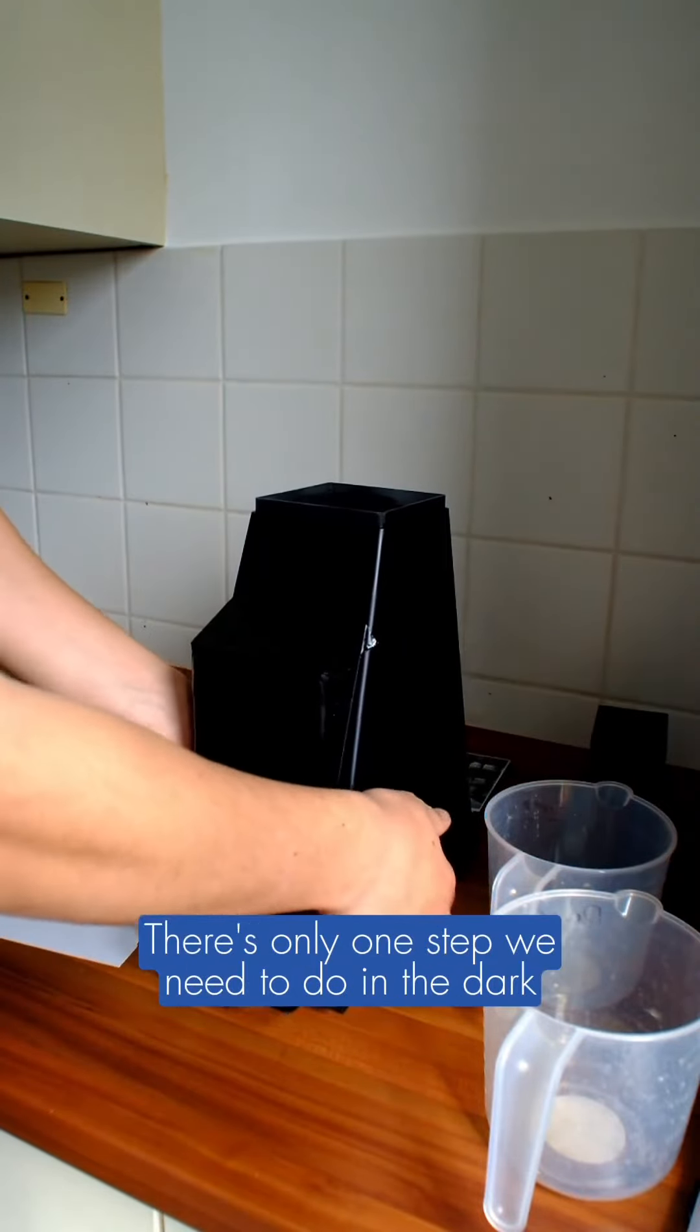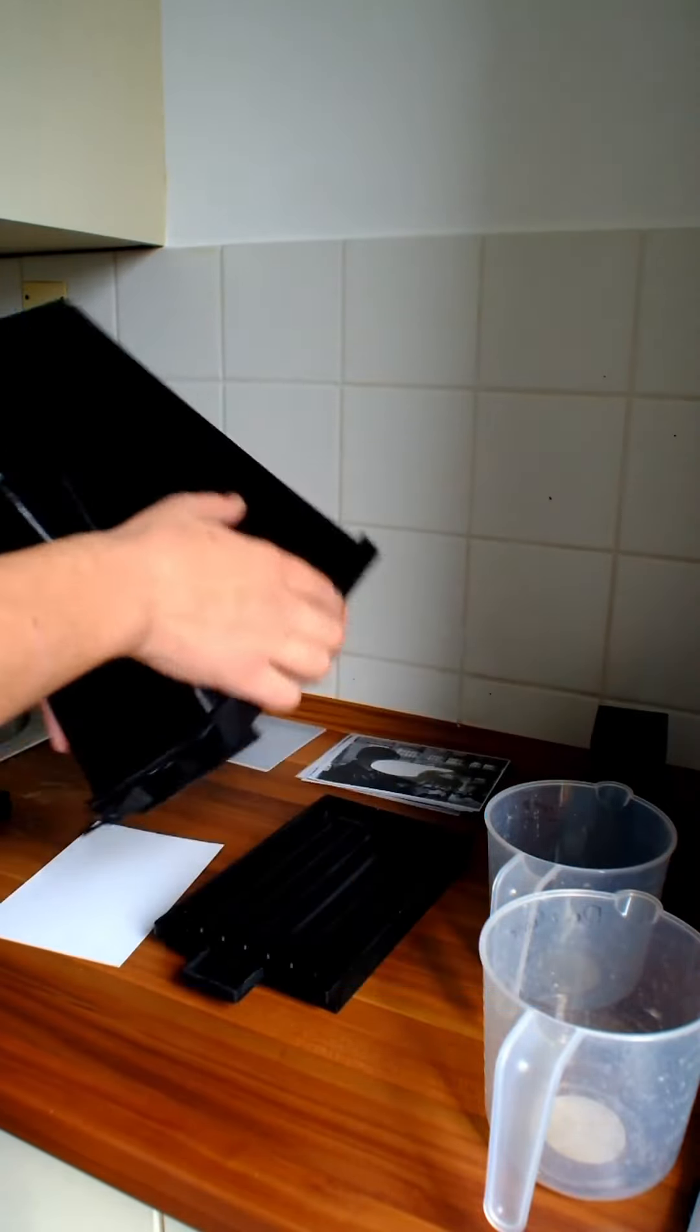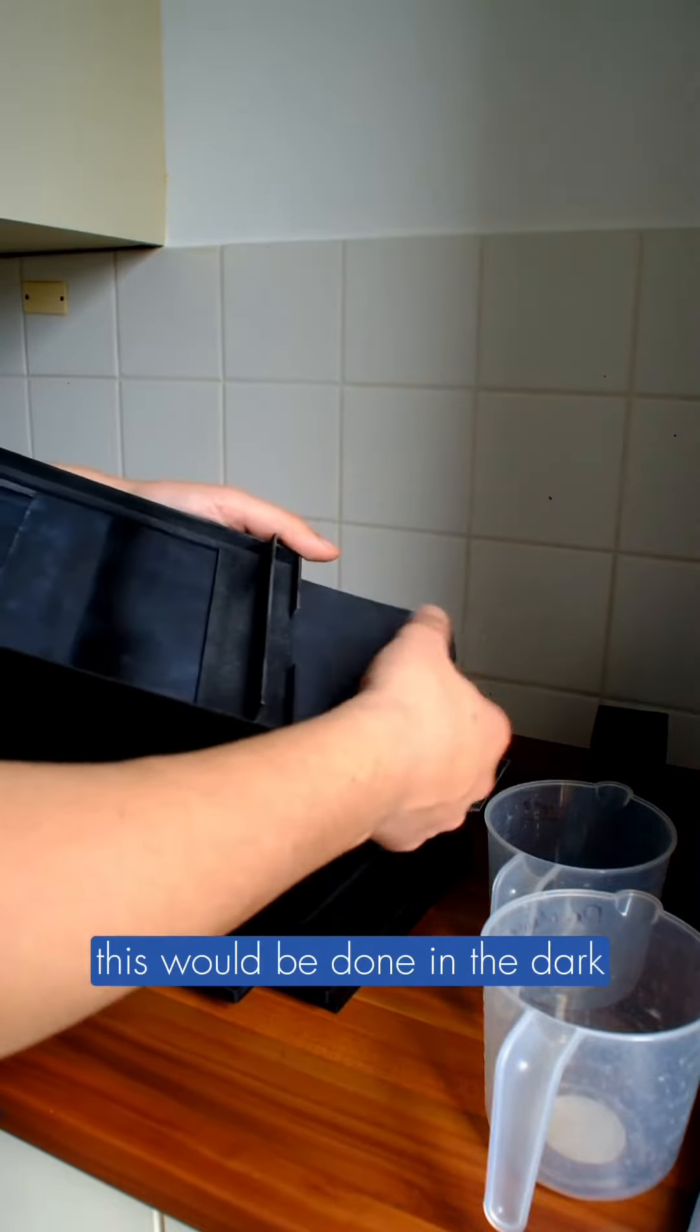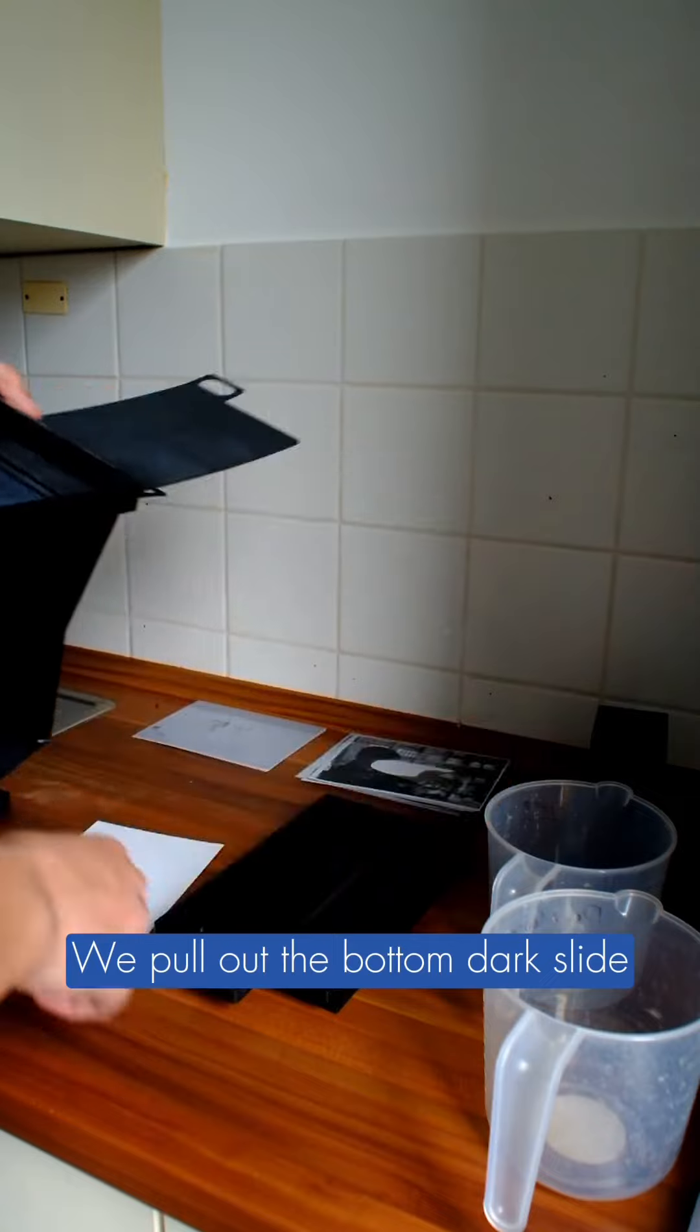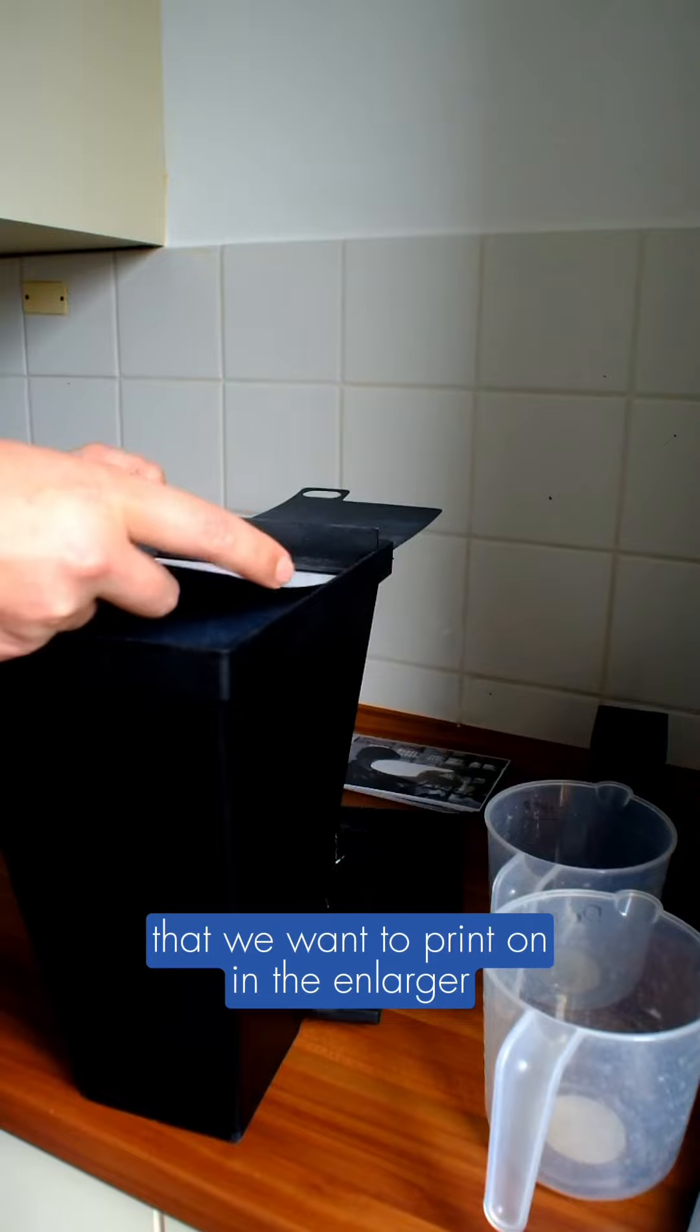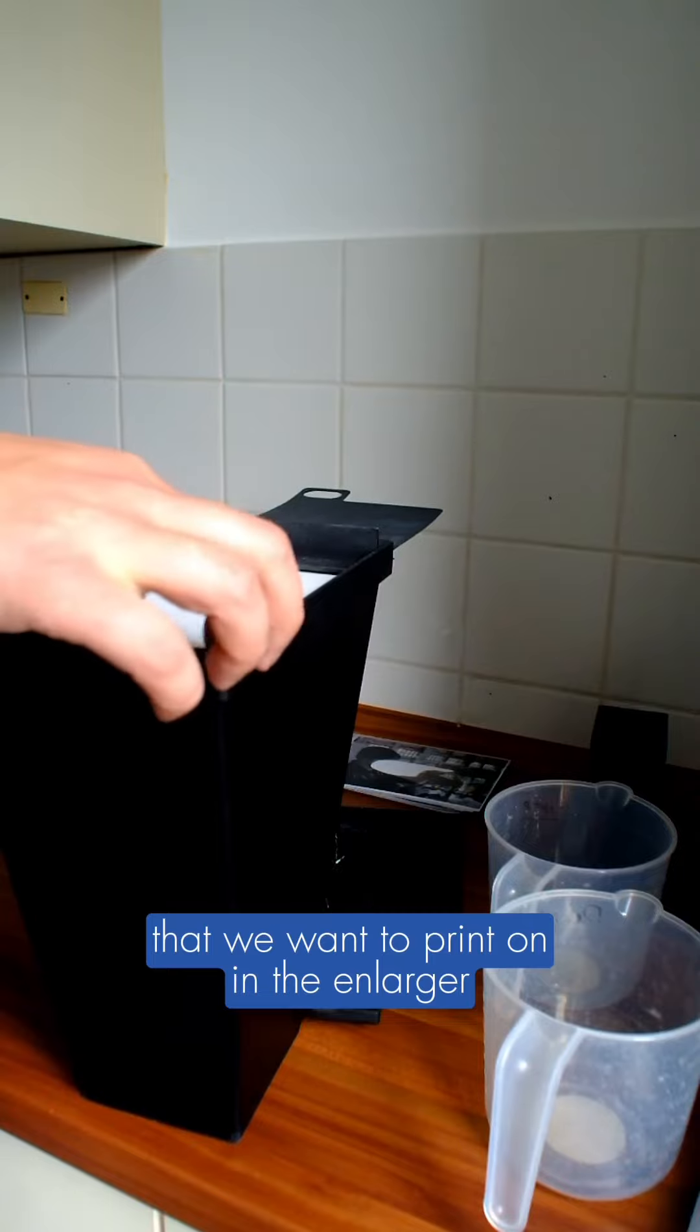There's only one step we need to do in the dark and we'll start there. So normally this would be done in the dark. We pull out the bottom dark slide and we place the paper that we want to print on in the enlarger.